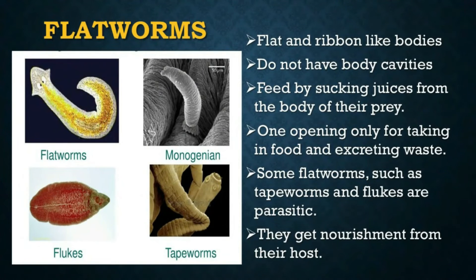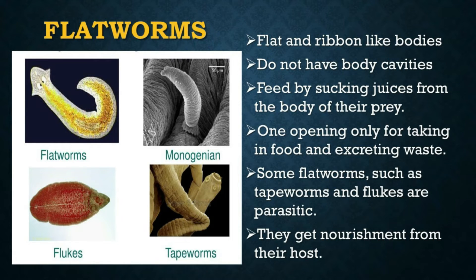Flatworms are called such because of their flat and ribbon-like bodies. They do not have body cavities that contain developed circulatory organs. They feed by sucking out juices from the body of their prey. Their digestive cavity has only one opening for taking in food and excreting waste. Some flatworms such as tapeworms and flukes are parasitic. A tapeworm's body is a series of segments; each segment has both male and female sex organs. This arrangement makes reproduction fast and convenient. They get nourishment from their host.